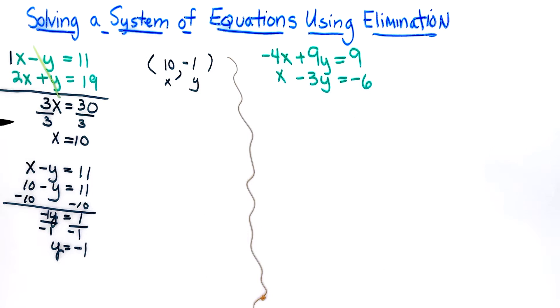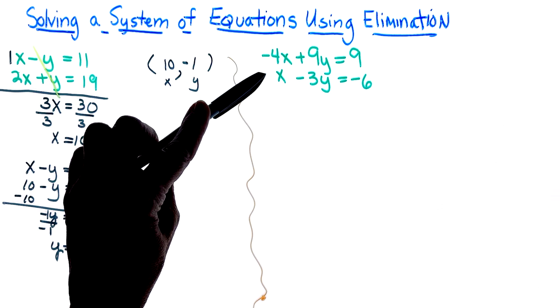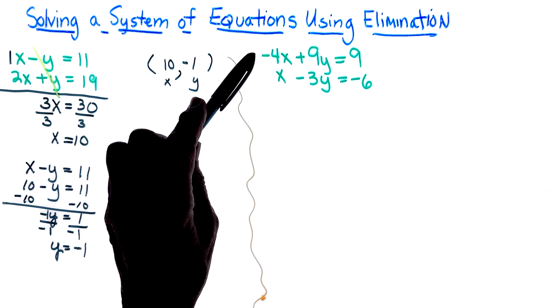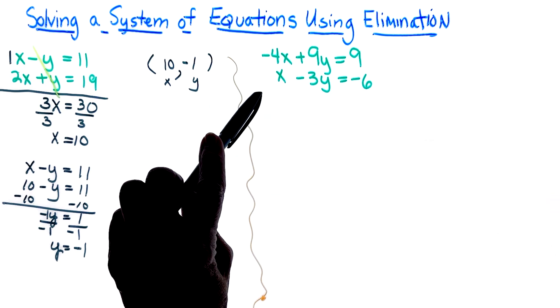The second problem that we have here now, it is negative 4x plus 9y equals 9 and x minus 3y equals negative 6. So again, these two are related and we know that when I'm solving by elimination I am going to end up combining the columns.